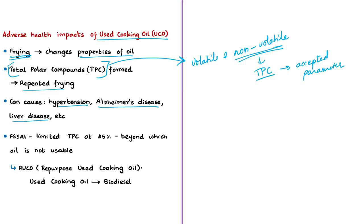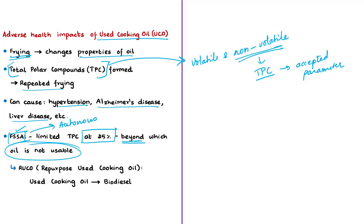TPC is a widely accepted parameter to decide whether oil is safe for further use. The toxicity in TPC can lead to diseases such as hypertension, Alzheimer's disease, and liver diseases. FSSAI has fixed a limit for total polar compounds at 25 percent; beyond this level, vegetable oil shall not be used for cooking. FSSAI — the Food Safety and Standards Authority of India — is an autonomous body established under the Ministry of Health and Family Welfare and is the apex body in India related to food safety and regulation.